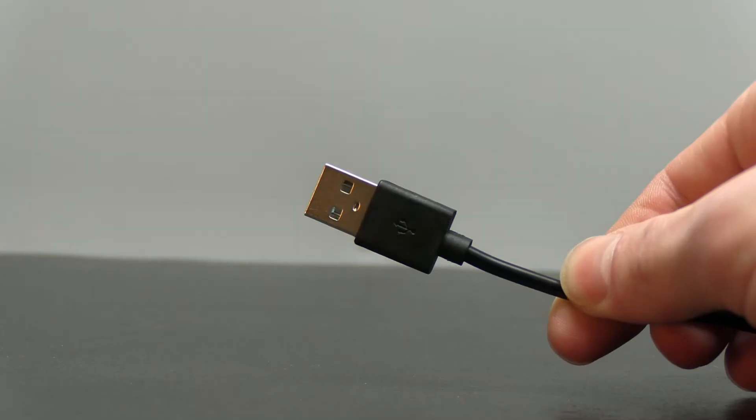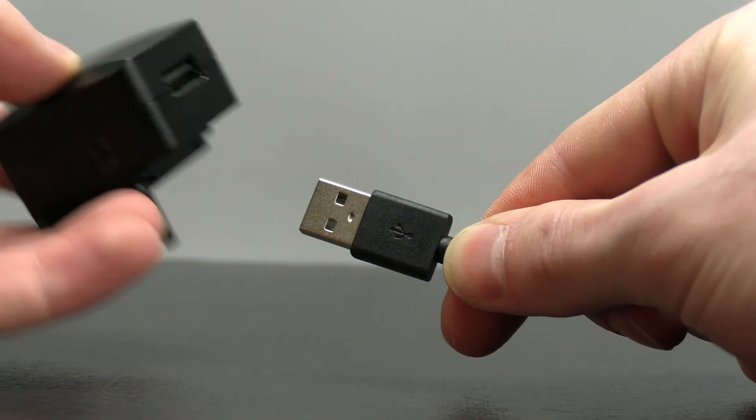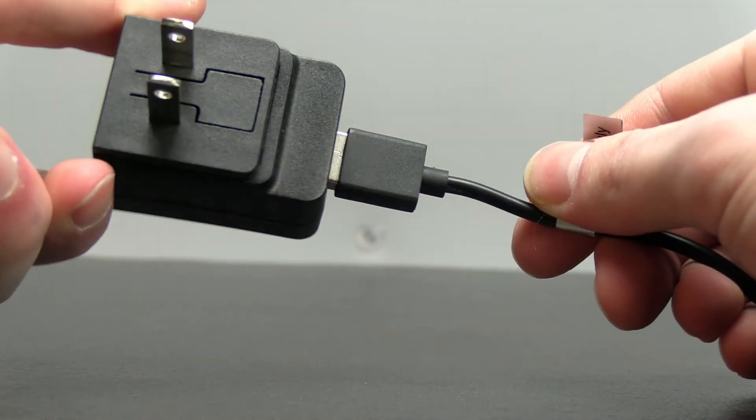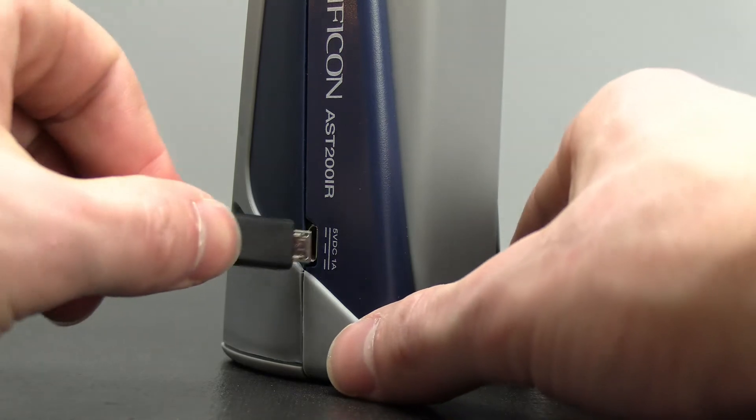You should charge your AST 200 IR before using it. Plug the USB cable into a power source like the included wall charger and plug the micro USB end into the power input on the side of the unit.